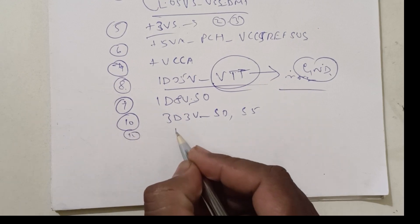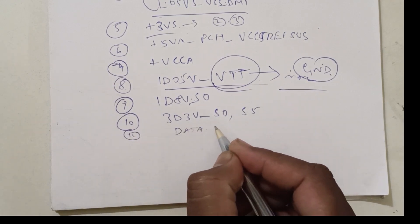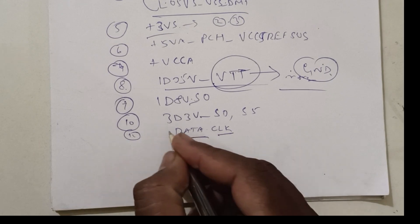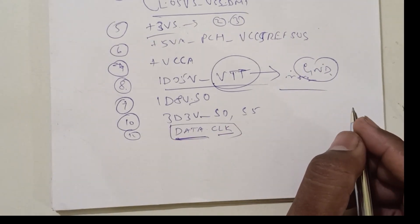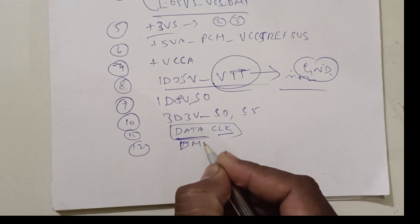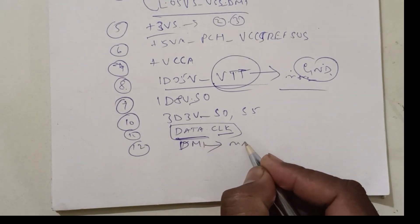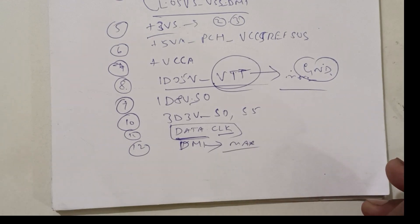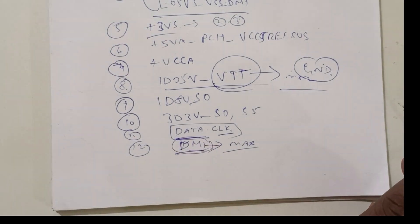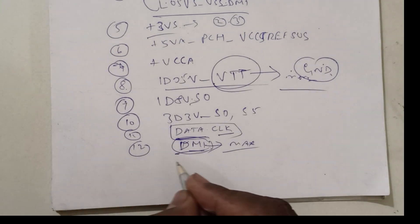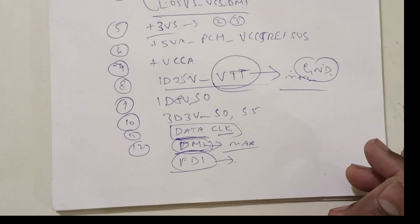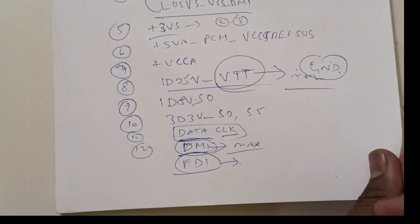Other than this, data, clock, these are common, it should be there to carry the data signals. Other than that, DMI tools, DMI buses, maximum number connected data. If you come to know one section, all sections can be easily understood, DMI. And then FDI, I will explain in future classes.